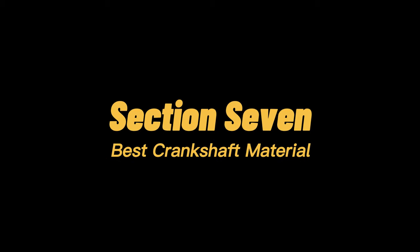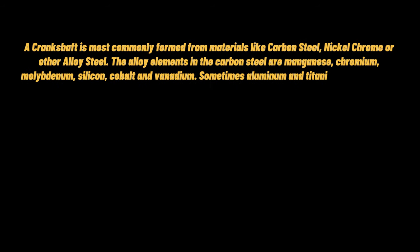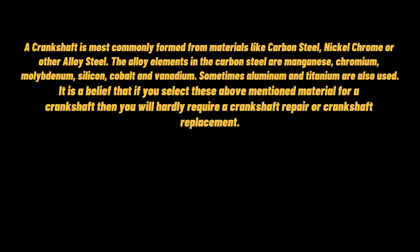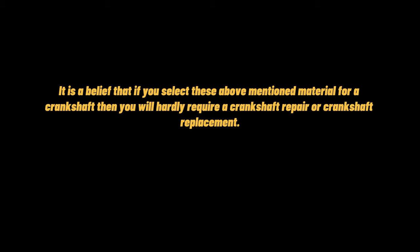Best Crankshaft Material. A crankshaft is most commonly formed from materials like carbon steel, nickel-chrome, or other alloy steel. The alloy elements in the carbon steel include manganese, chromium, molybdenum, silicon, cobalt, and vanadium. Sometimes aluminum and titanium are also used. It is believed that selecting the above-mentioned materials for a crankshaft will mean you will hardly require a crankshaft repair or replacement.